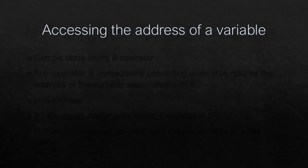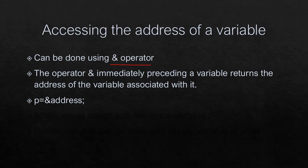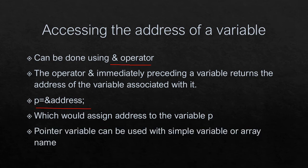How to access the address of a variable? To access a variable's address, we use the ampersand (&) operator. For example: p = &quantity assigns the address of the variable to p. A pointer variable can be used with a simple variable or an array name.